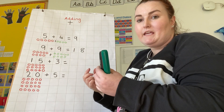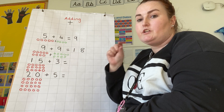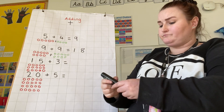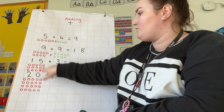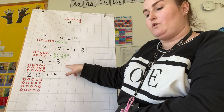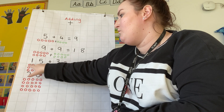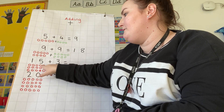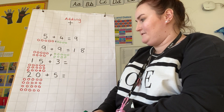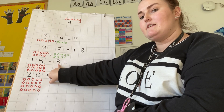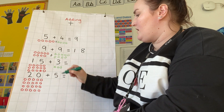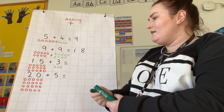I don't have to use counters — I could use a bead string, I could use cubes, I could use compare bears — but I need to count them all together. Now we're going to do the next one. Read it first: fifteen add three equals. I've represented my number: one, two, three, four, five, six, seven, eight, nine, ten, eleven, twelve, thirteen, fourteen, fifteen. Now I need to represent my next number, which is three — different colored pen: one, two, three.